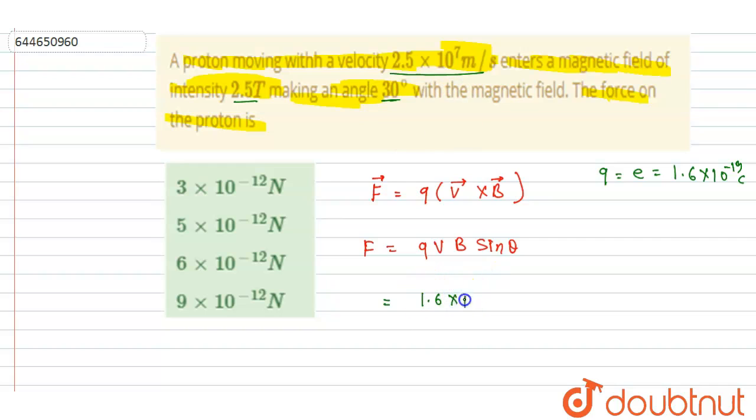Put the values. Velocity is this, into magnetic field intensity is this, sine 30. Right, if you see here theta equals 30 degrees, so sine 30 I will write here.